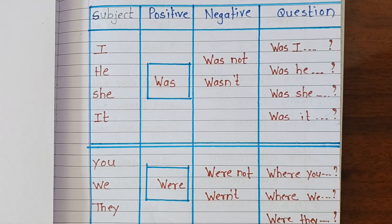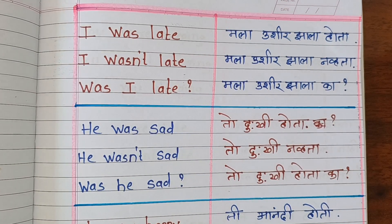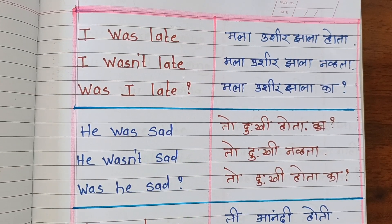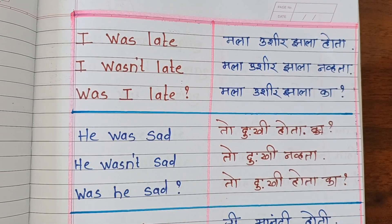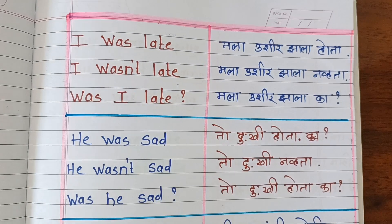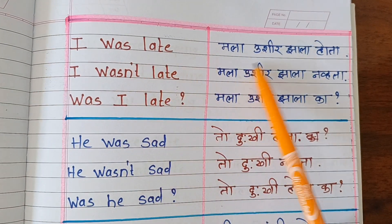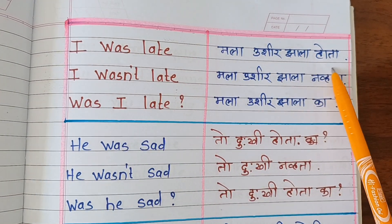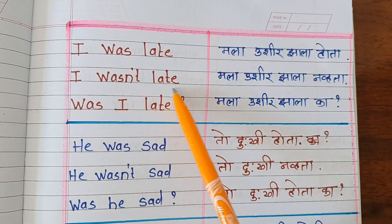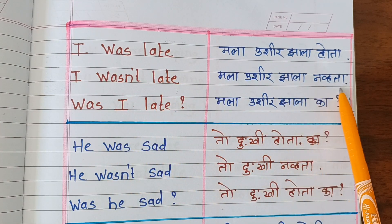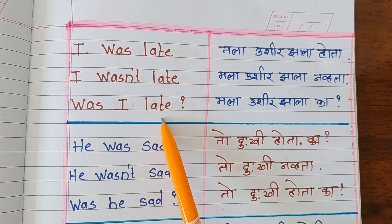You will learn a lot from this chart. We will learn sentences and know how to form a sentence. We will read English and Marathi — not only the words but also the lesson. First sentence: 'I was late' — meaning you were late for a long time. Negative: 'I wasn't late.' Question: 'Was I late?'